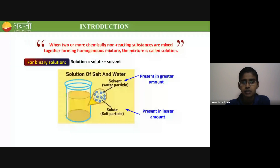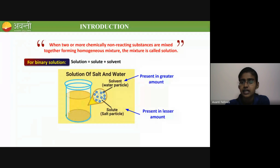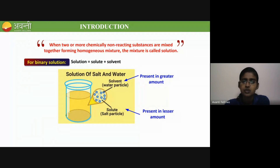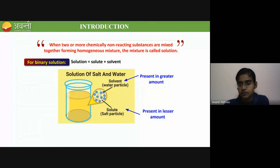Coming to the introductory part: what is a solution, solute, and solvent? When two or more chemically non-reacting substances are mixed together forming a homogeneous mixture, the mixture is called a solution. The solvent will be in the larger amount and the solute will be in a very lesser amount — like sugar and water.